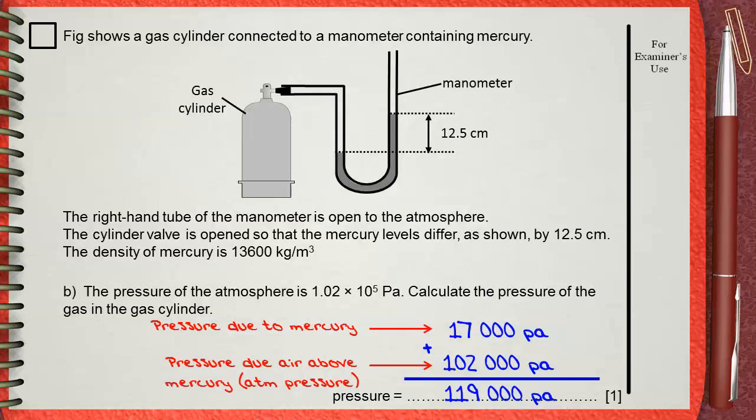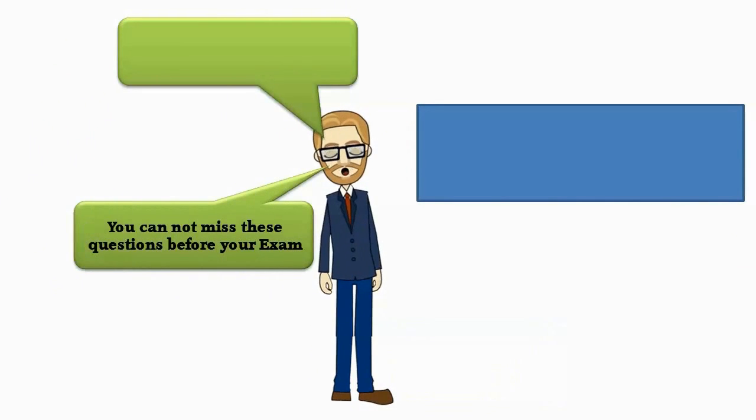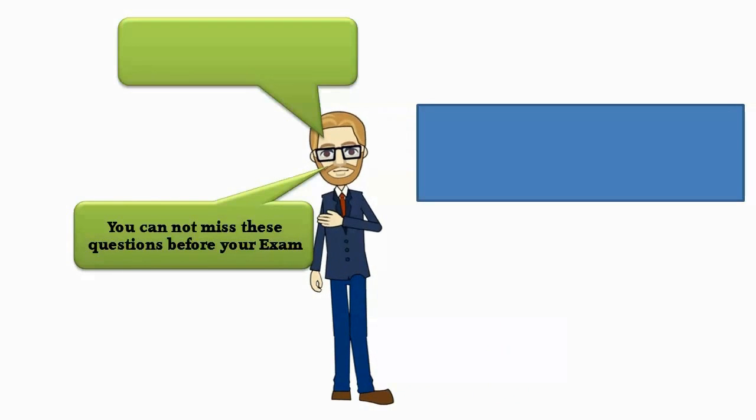This question explains how we use the manometer in measuring the pressure inside a gas cylinder which is already adjusted to air up here.